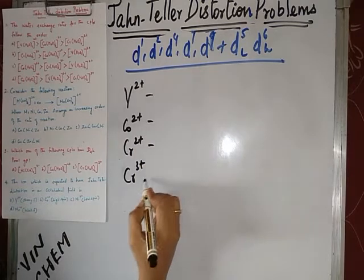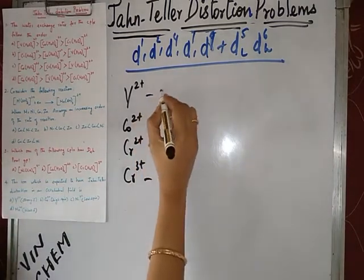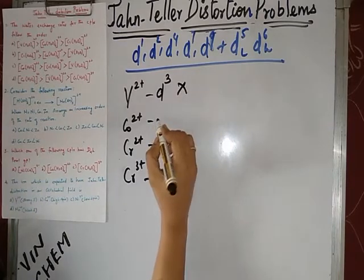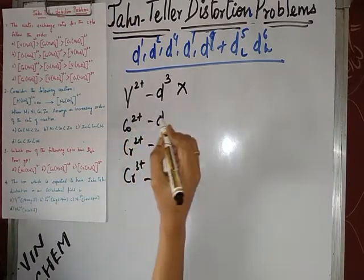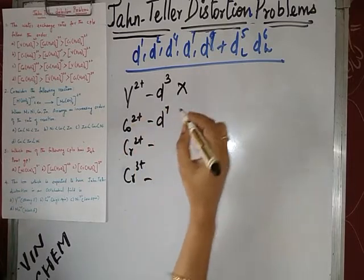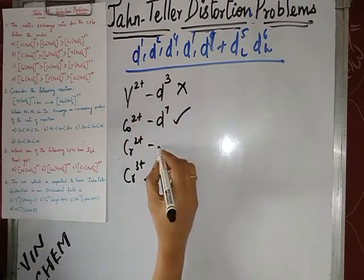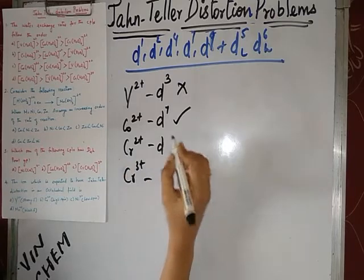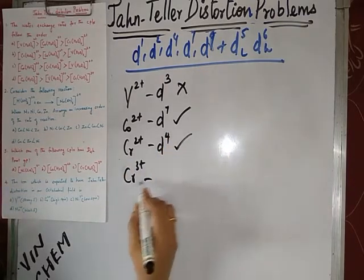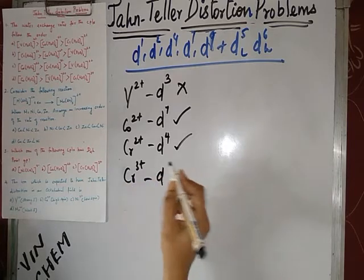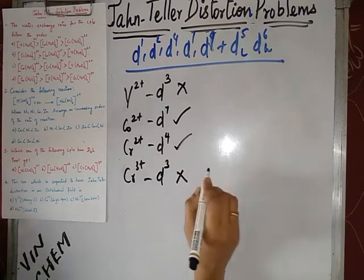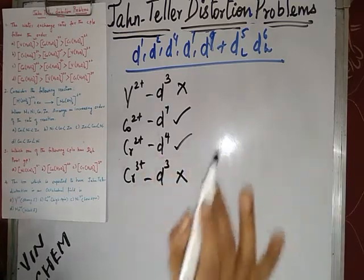We check the d-orbital configuration for each ion. Vanadium 2+ is d3 — there is no Jahn-Teller distortion. Cobalt 2+ is d7 — Jahn-Teller distortion is present. Chromium 2+ is d4 — Jahn-Teller distortion is also present. Chromium 3+ is d3 — one more electron is removed, so there is no Jahn-Teller distortion.